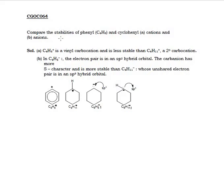Compare the stabilities of phenyl (C6H5) and cyclohexyl cations and anions. First we have to draw the phenylic carbocations. If I talk about phenyl cations, in benzene there's a positive charge.